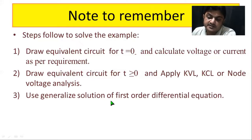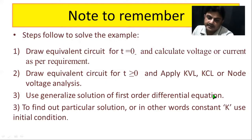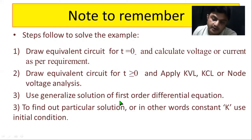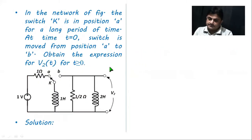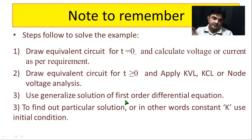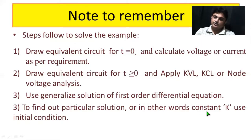In the third step, we use the generalized solution of the first order differential equation: dx/dt + px = q. We directly utilize this generalized solution obtained in our last class. In the fourth step, we calculate the particular solution by finding constant K. To obtain K, we consider the initial condition — at the time of switching, say t = 0. We substitute t = 0 into the generalized expression and use the voltage or current parameters calculated in the first step to find K.